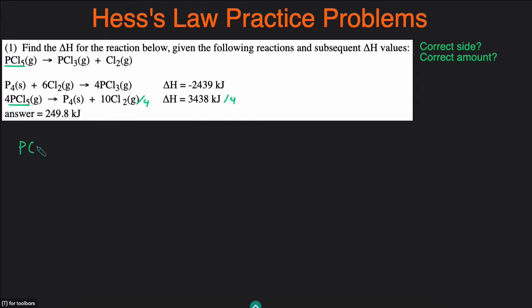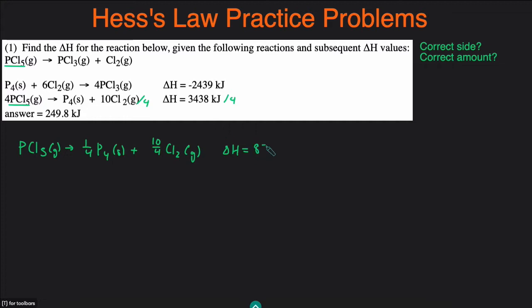So we'll rewrite the reaction after dividing everything by four. That will be PCl5 gas becoming P4 solid plus 10 over 4 Cl2 gas. And then the delta H is going to be 3438 divided by four, which is 859.5.